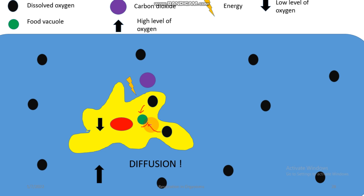Dissolved oxygen comes inside and carbon dioxide goes outside. The carbon dioxide also directly crosses the cell membrane — no specialized organ is needed. It simply passes through the cell membrane and enters the water. This is how gas exchange takes place during the process of respiration in amoeba. I hope everyone understood. Thank you, have a great day!